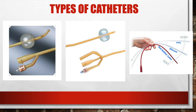The three-way catheter has an extra port on the end, which allows for irrigation. And the intermittent or straight catheter is for a patient who doesn't need a catheter in all the time but may have urinary retention. We can insert it, drain the bladder, and pull it back out — typically every four to six hours to keep the bladder from staying full.